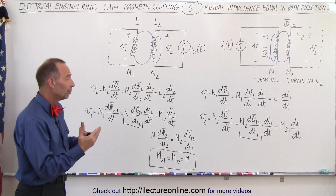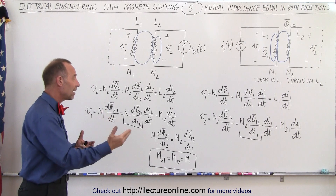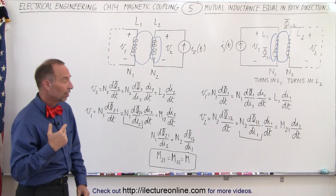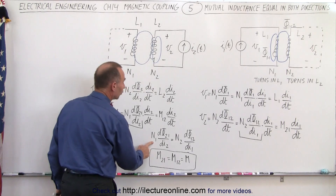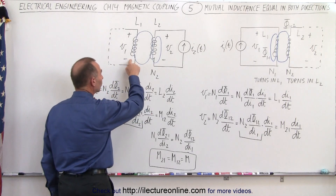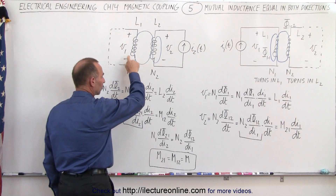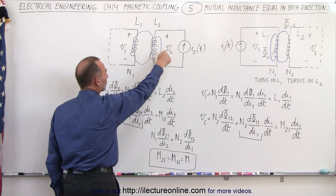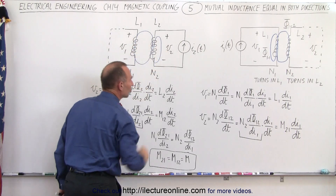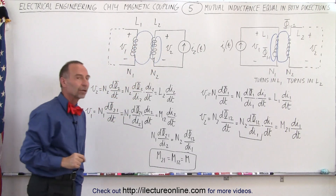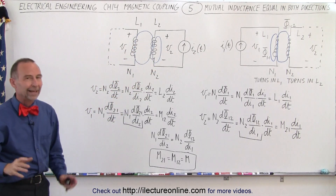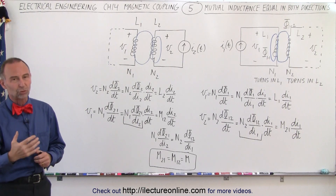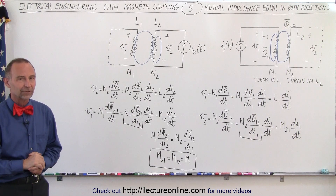The mutual inductance is simply the same in both directions. It is the number of turns in one inductor times the rate of change of the flux through that inductor with respect to the change in the current in the other circuit. And that is the definition of the mutual inductance.